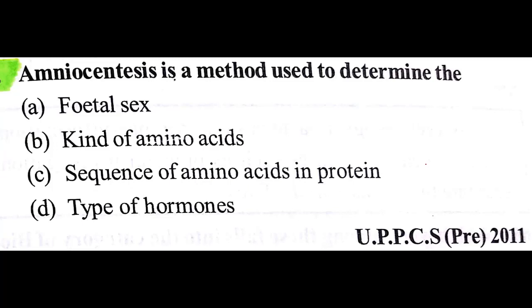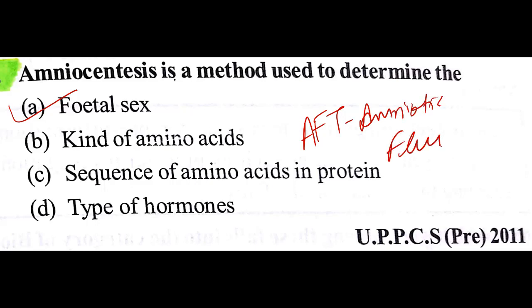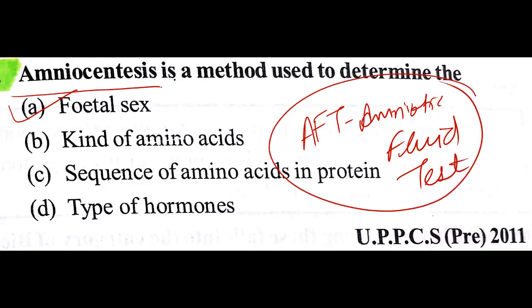Amniocentesis is the method used to determine fetal sex — very true. The test is an AFT, that is amniotic fluid test. This test, known as amniocentesis, is used for fetal sex determination, but at the same time it is also used for knowing the genetic abnormalities of the fetus in the womb.